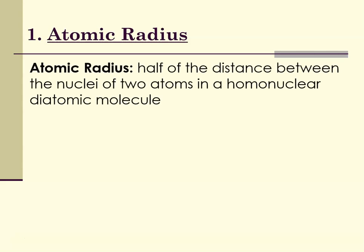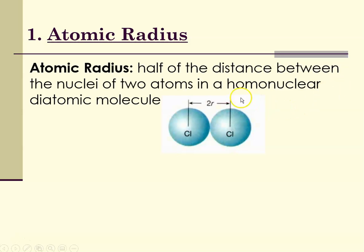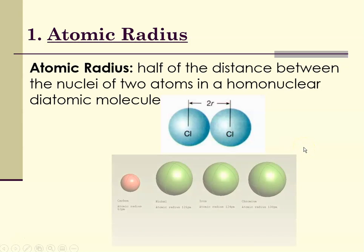The definition seems more complicated than it needs to be, but here's how it's defined: half the distance between the nuclei of two atoms in a homonuclear diatomic molecule. Here is chlorine, which is a diatomic molecule, so we're talking about half the distance between the nuclei. The atomic radius is measured in picometers.